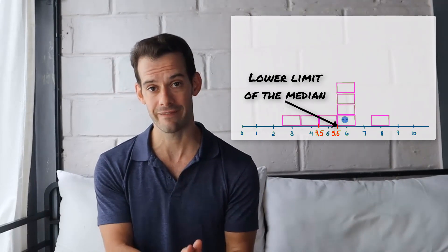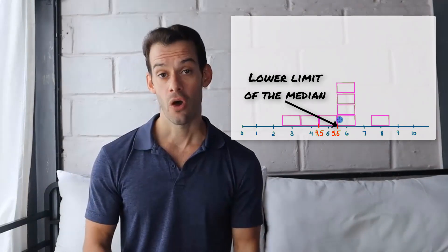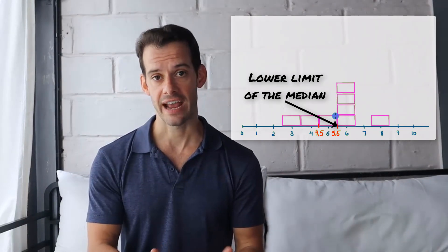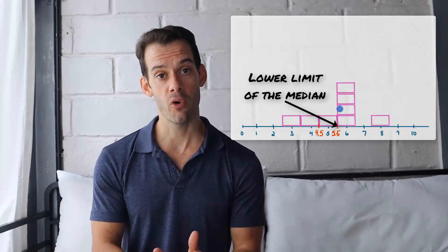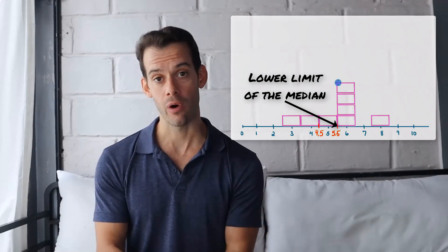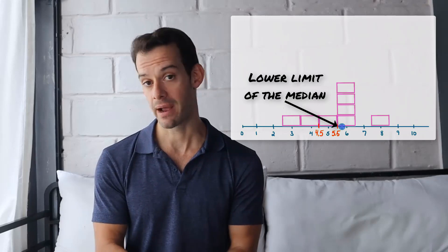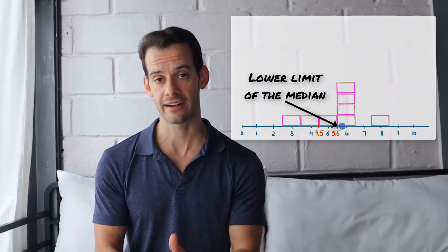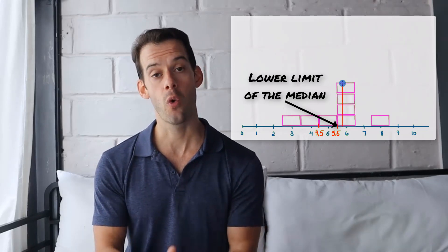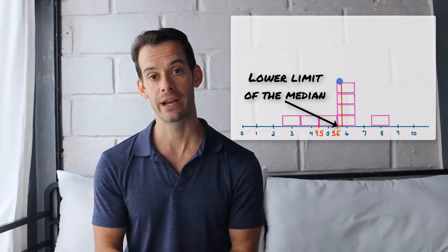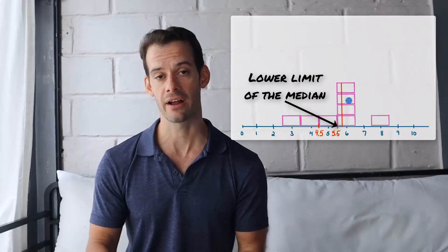So our median is going to be somewhere between 5.5 and 6. So we don't need all those boxes that are stacked up at 6. We actually just need a portion of them in order to reach 4 boxes to the left of our line and 4 boxes to the right. And you might see that since there's 4 boxes stacked up at 6 we could just take a quarter of each of those boxes. That would give us 4 boxes to the left, 4 boxes to the right.